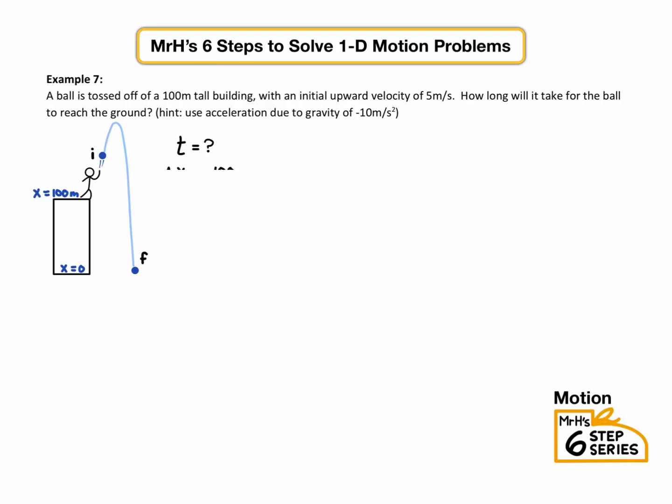Now this is kind of important because your initial position is off the ground. And typically, we do up is positive, down is negative. So we're going to have a negative displacement. And when you make your list, delta x equals negative 100. A lot of times people forget that negative sign. So just be careful there. Initial velocity, positive 5 meters per second. And acceleration was negative 10 meter per second squared from gravity. That's always going to be the rate from gravity.